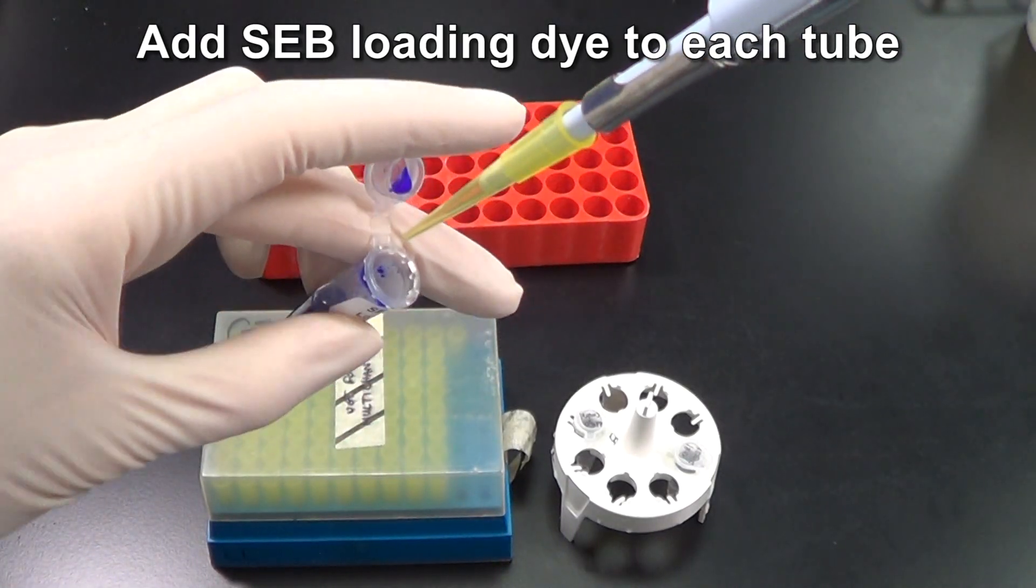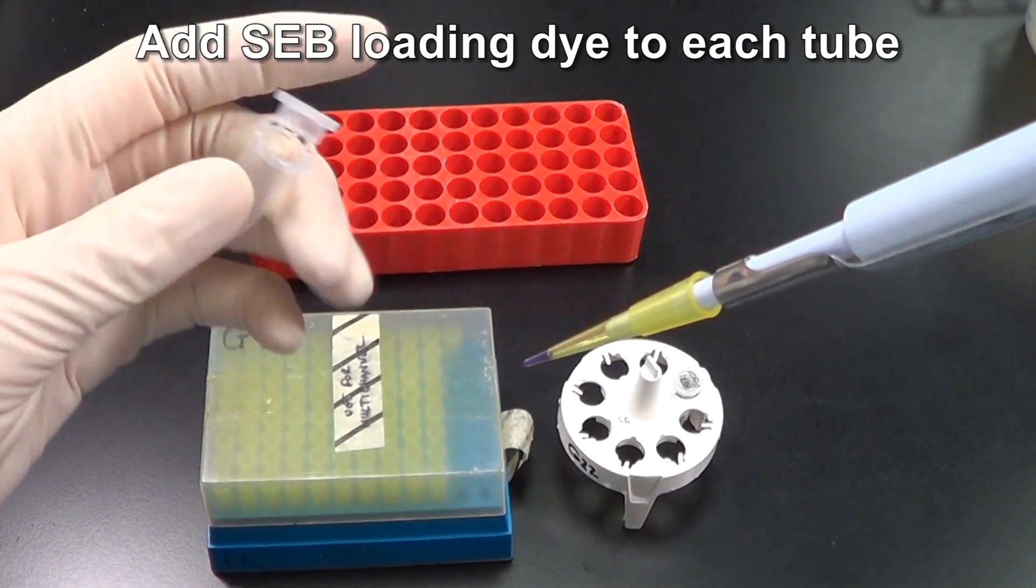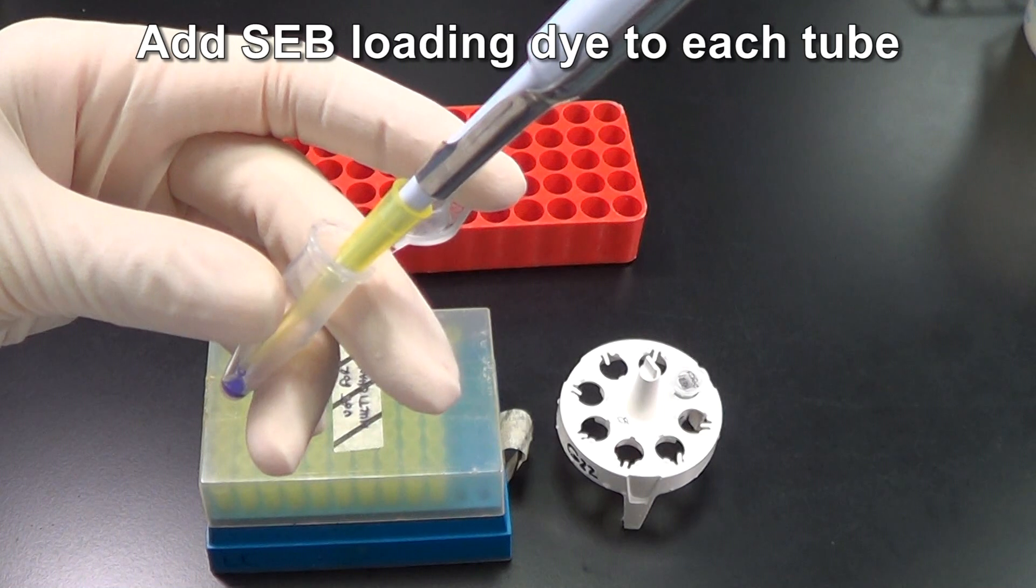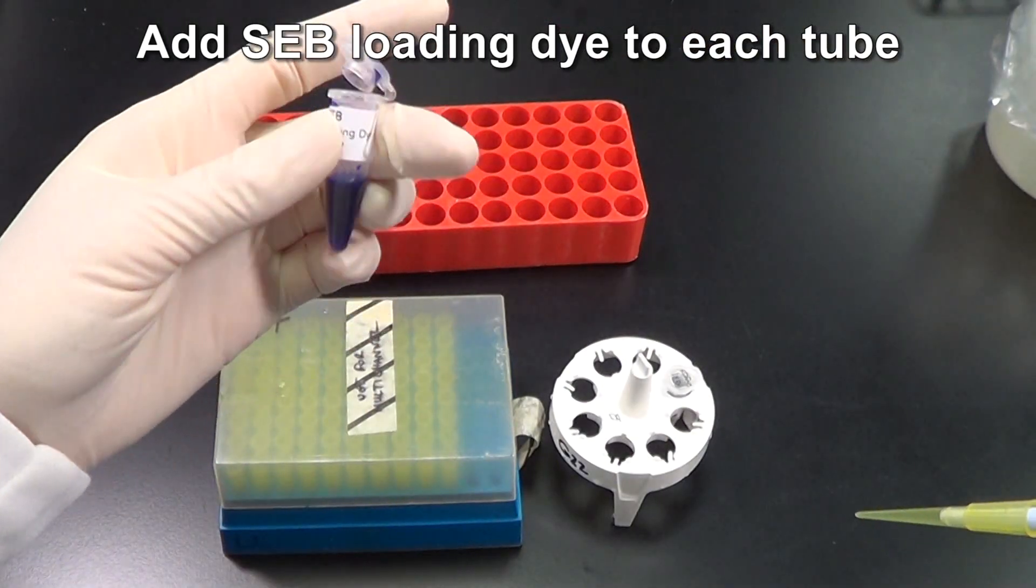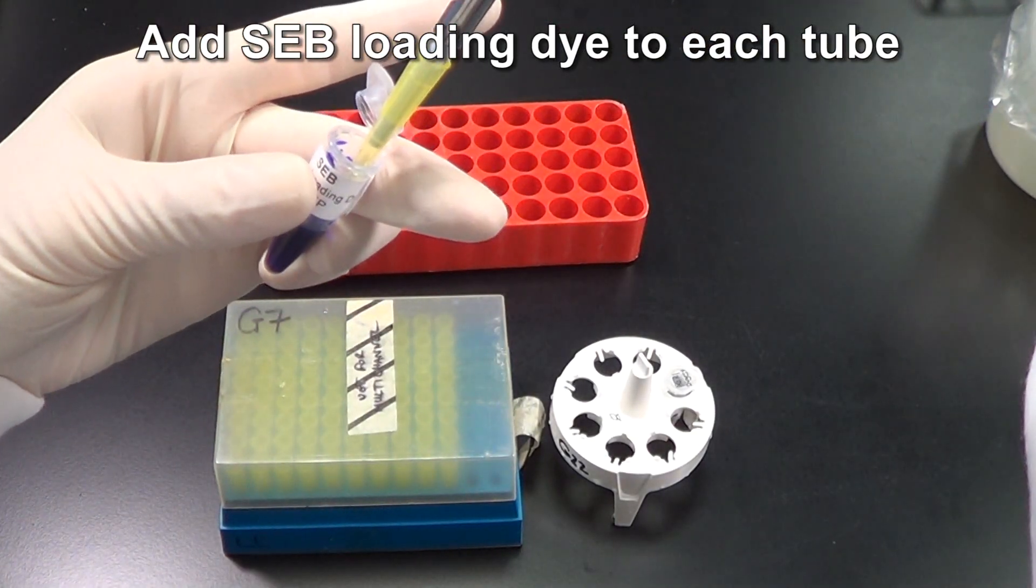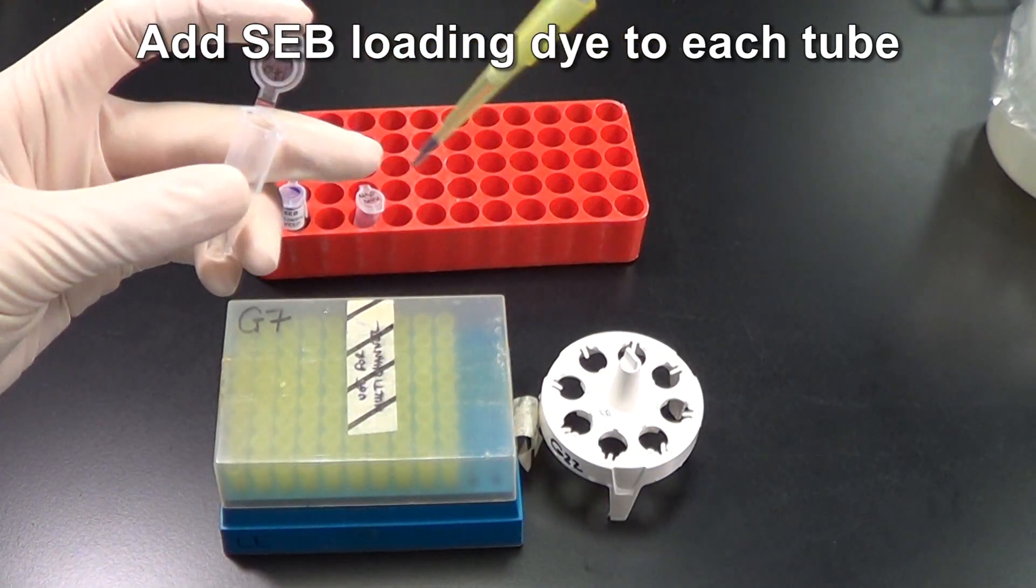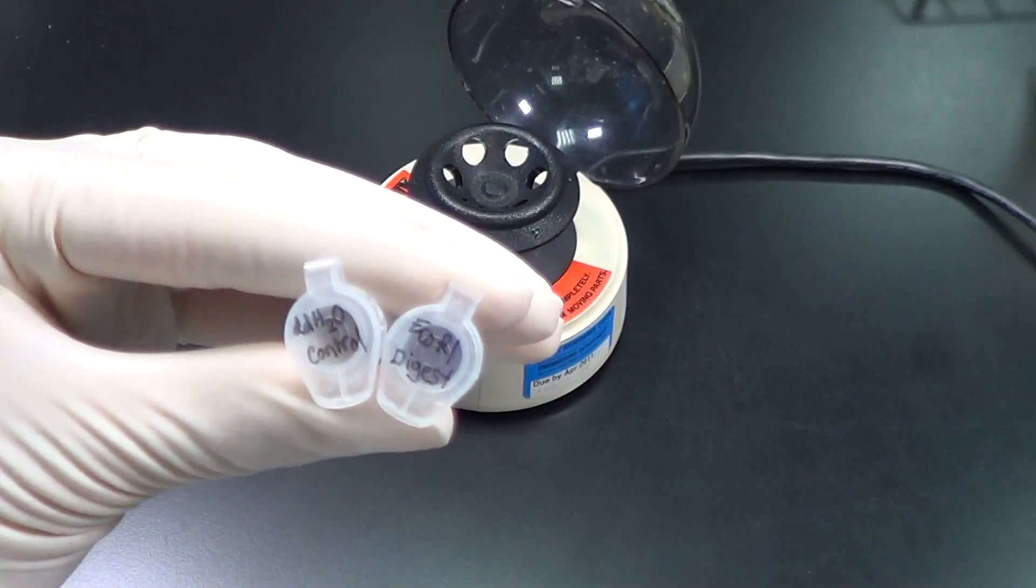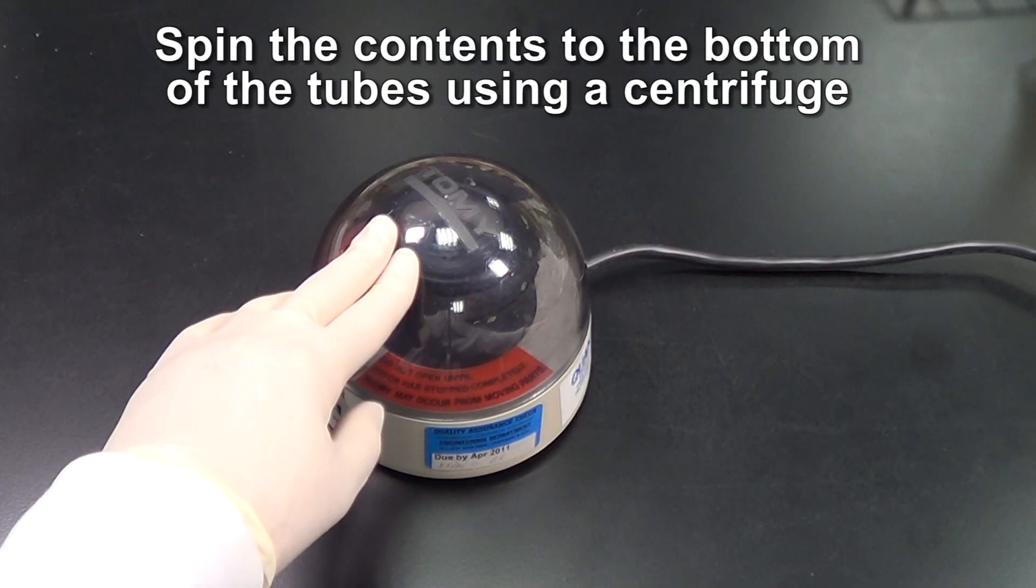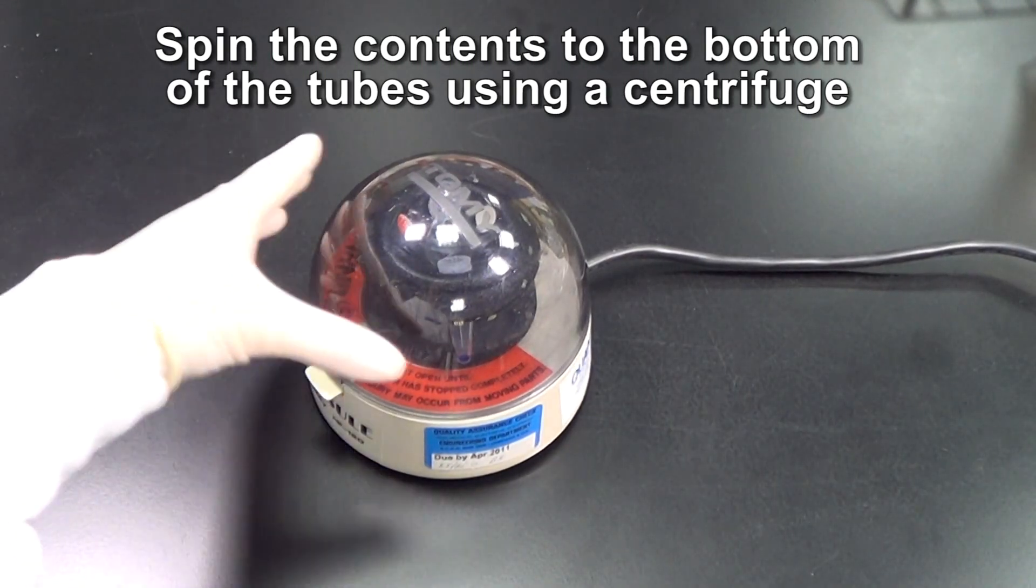Add SEB loading dye to each tube. Collect the contents into the bottom of the tube by centrifugation. Then load the samples onto an agarose gel.